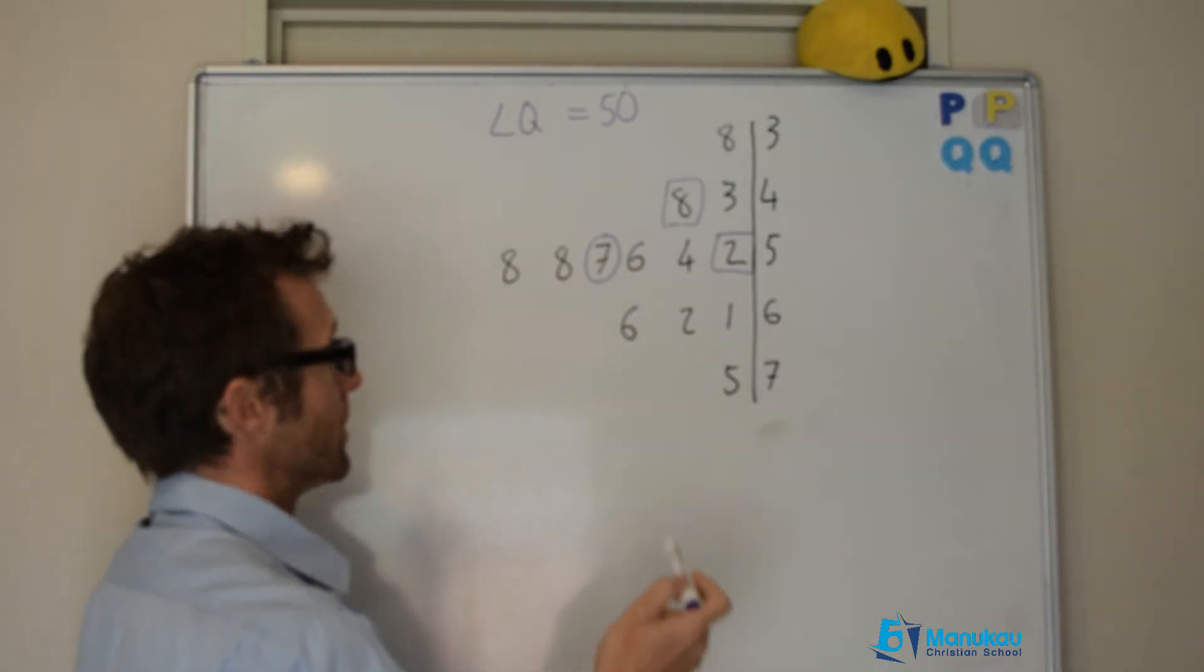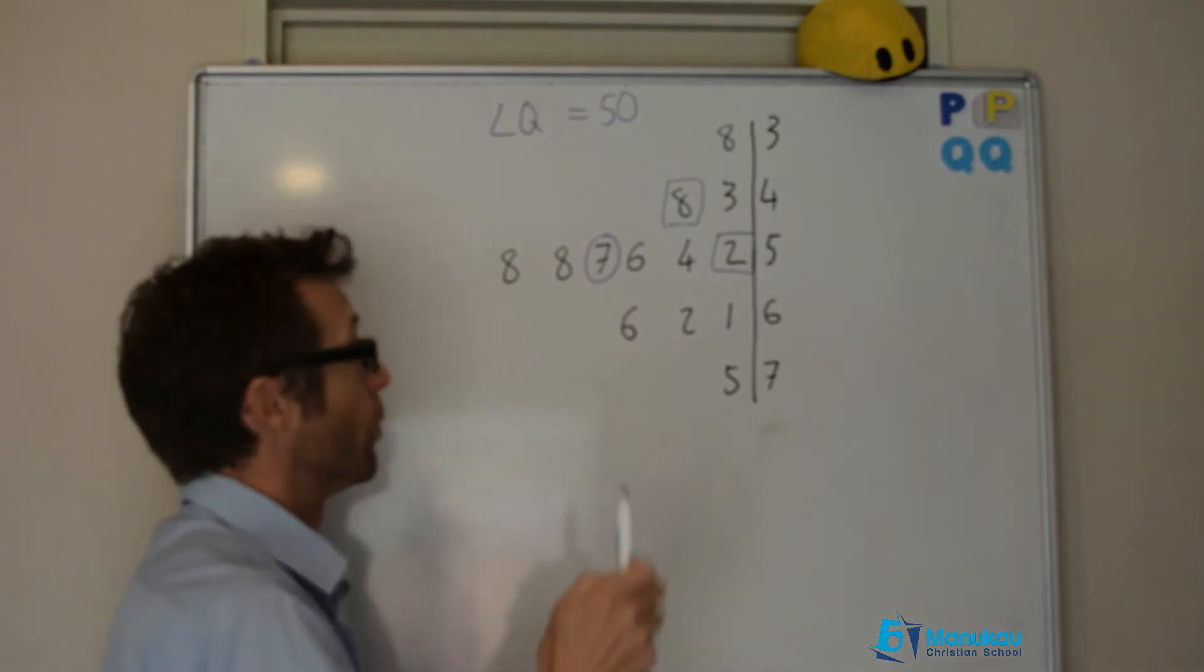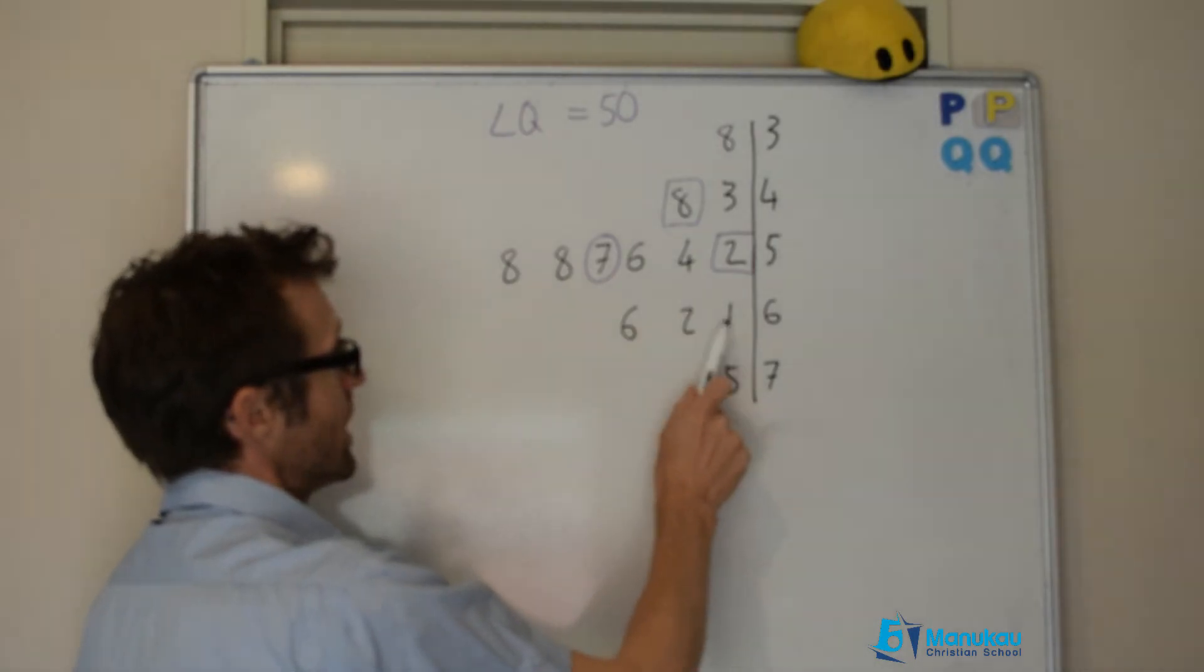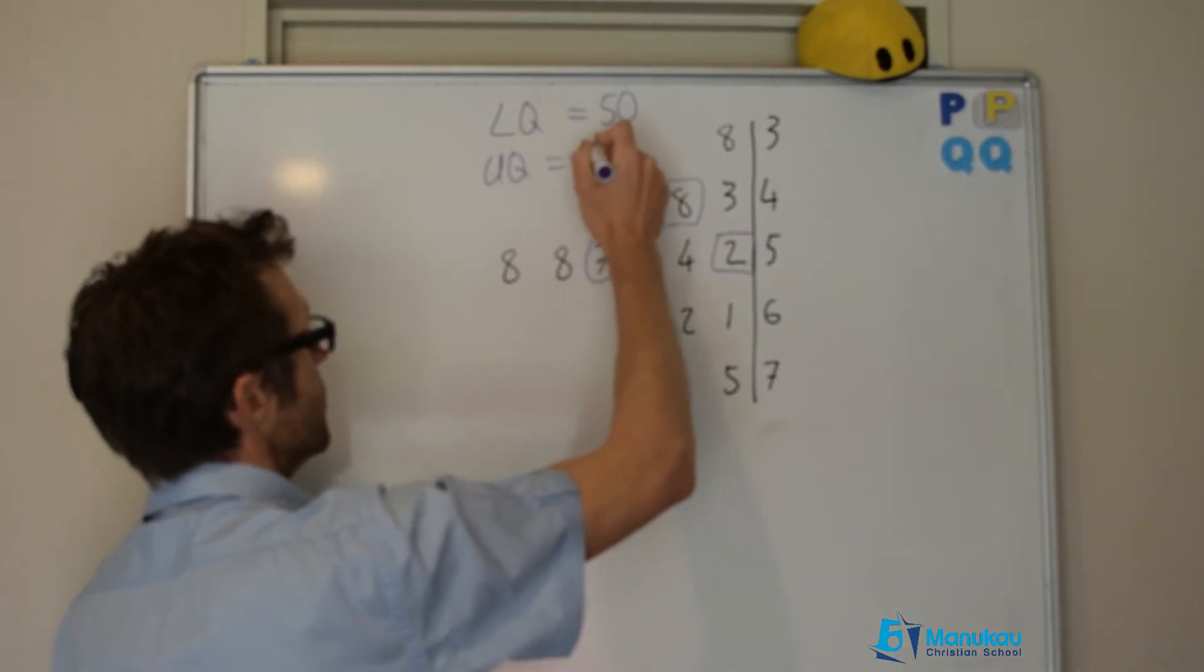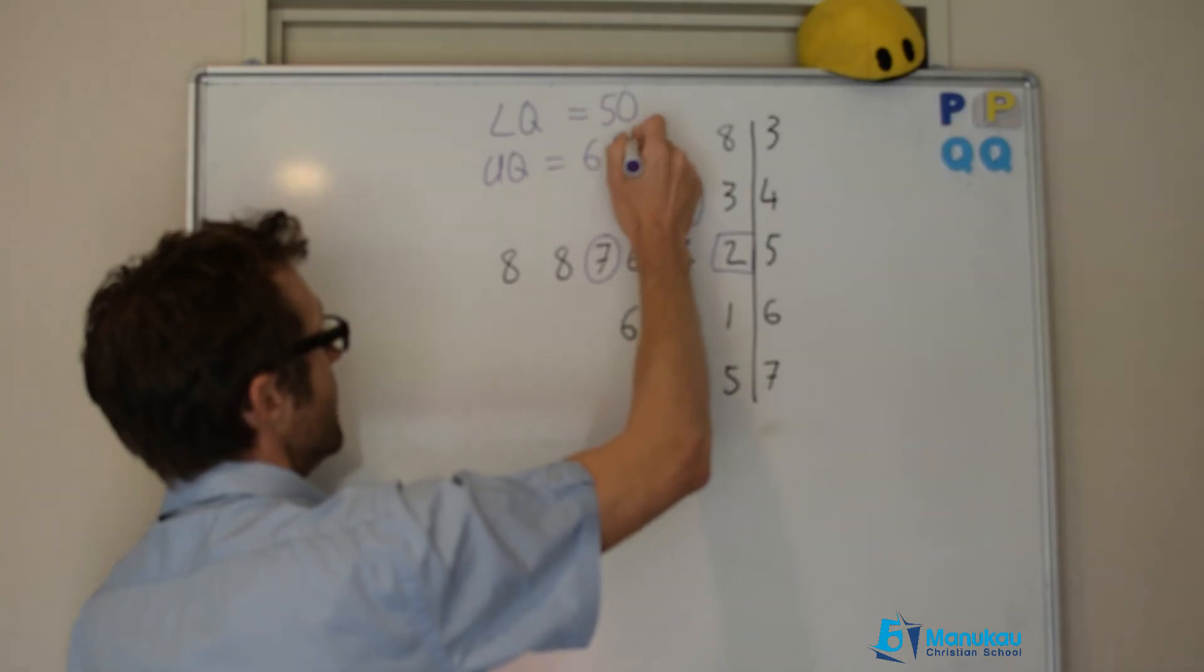So we're looking between the third and fourth points. 1, 2, 3, and 4. 61 and 62. Our upper quartile will be equal to 61.5.